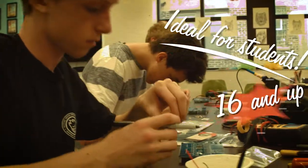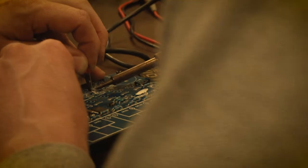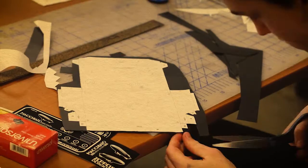Ideal for students age 16 and up, the project consists of two phases: soldering components onto a circuit board and building a cabinet.